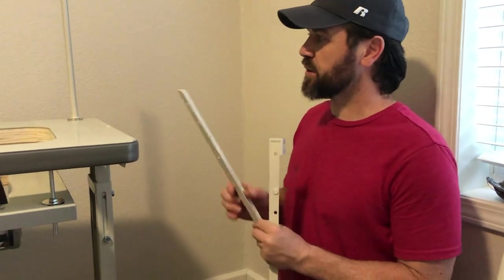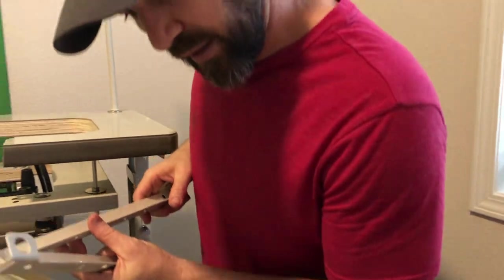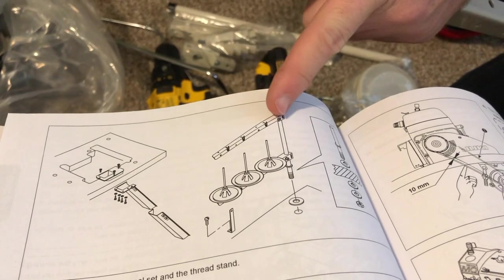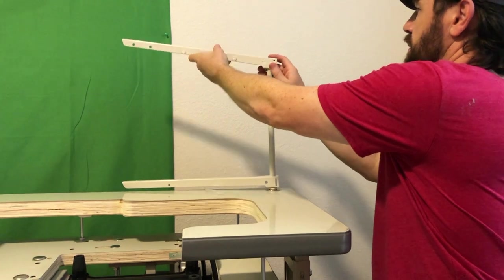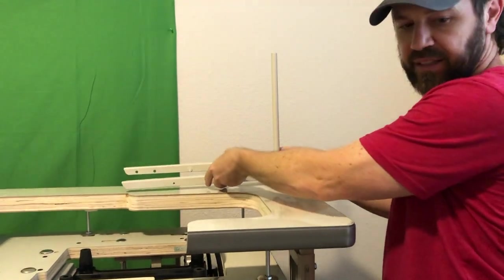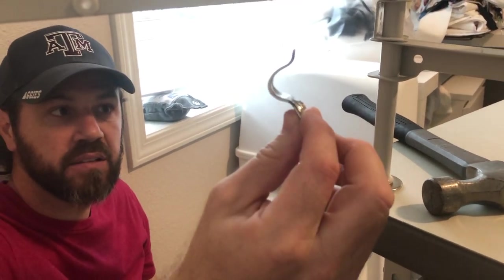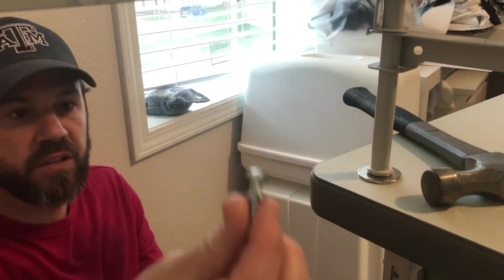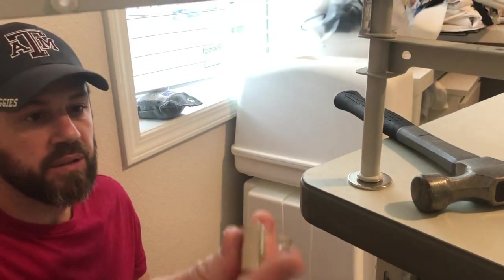Alright, so we're going to install the thread brackets now onto the post here. And as far as I can tell, it looks like they sit with the corner facing the front of the table. Alright, just like that. Okay guys, so we're going to have four of these brackets.